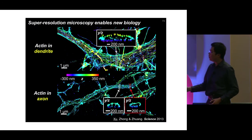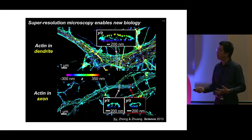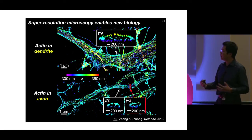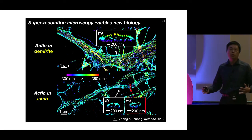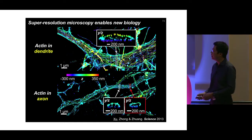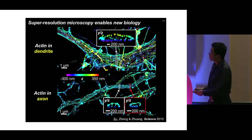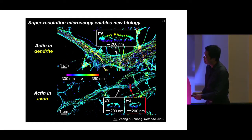During my postdoc I developed this method and showed a great example where super-resolution microscopy can give us new biology. Looking at actins in the dendrites and axons of neurons — at conventional resolution you cannot see anything, it's just blurry — but after resolving the structure we found a striking discovery: in the axon there are periodic ring-like structures arranged along the axon, strikingly different from the dendrite or any other cell type.